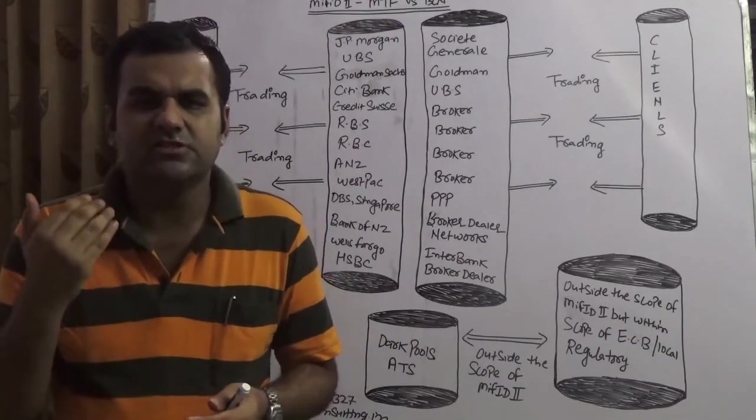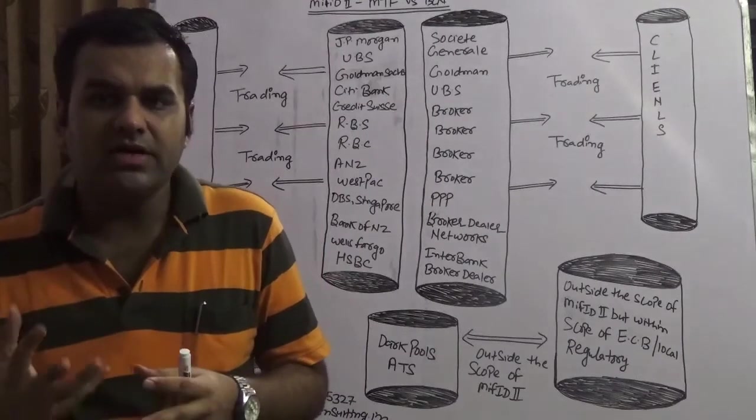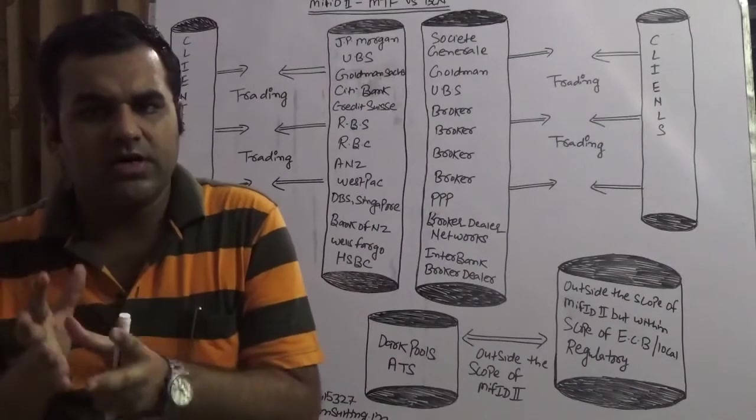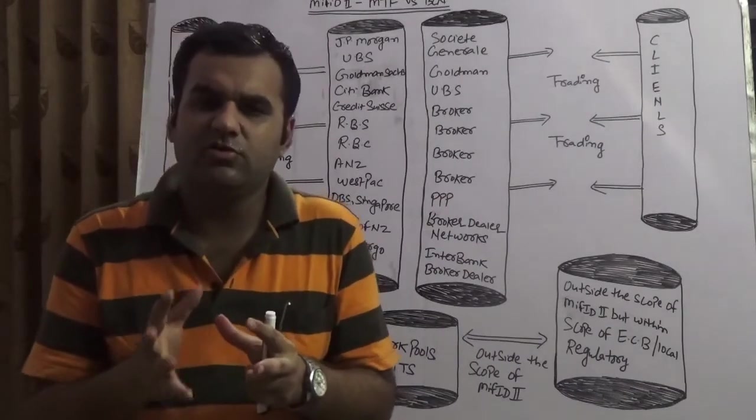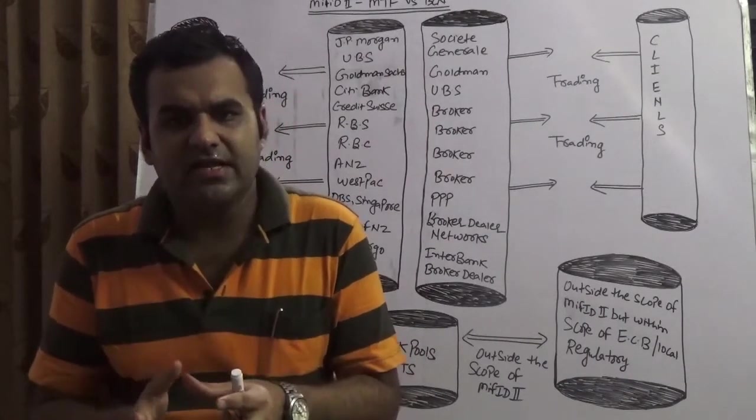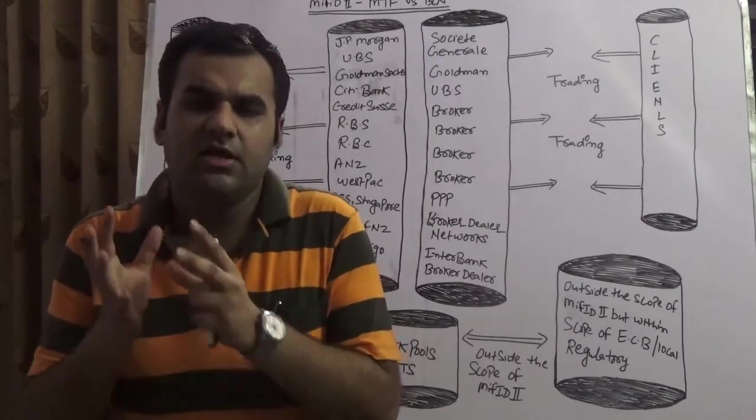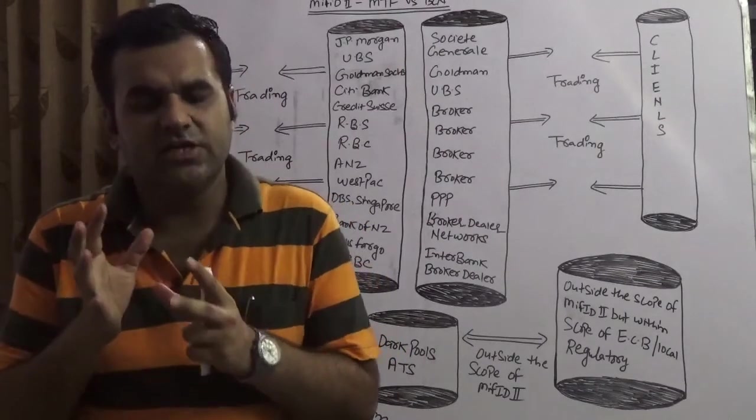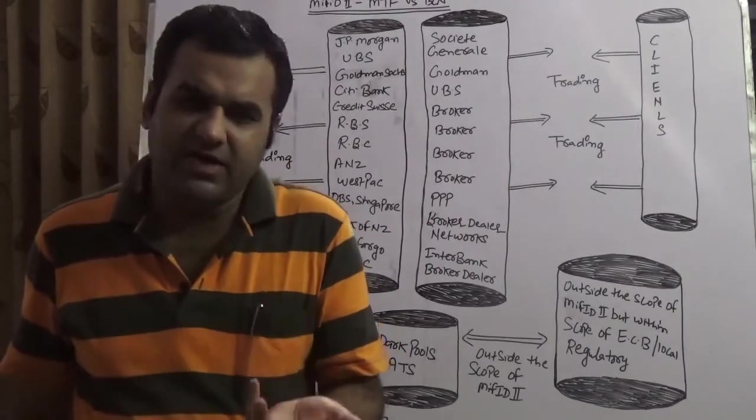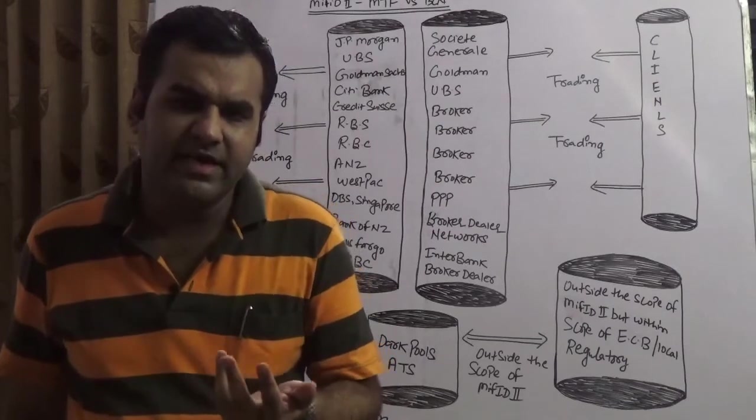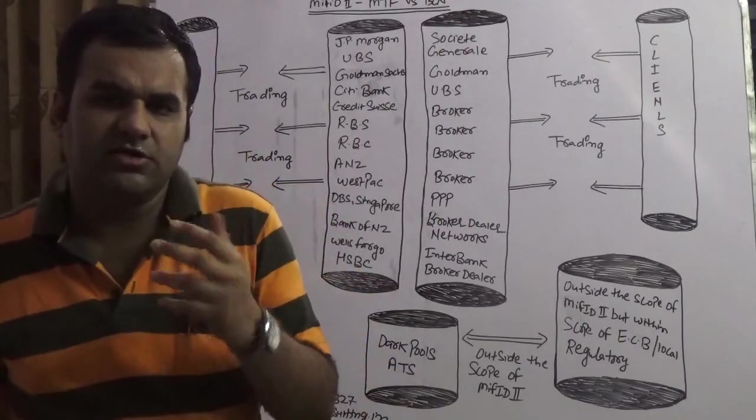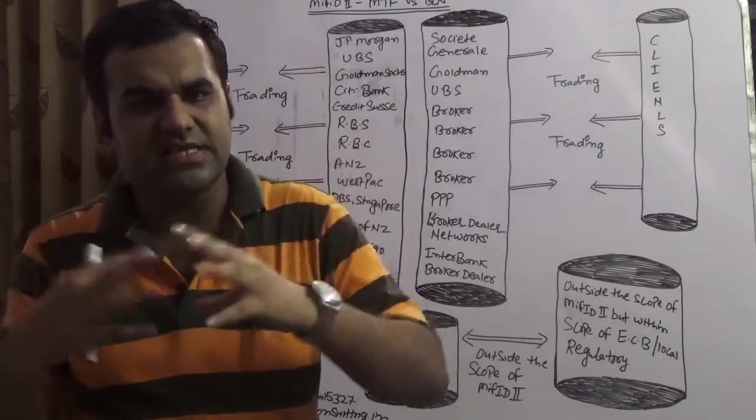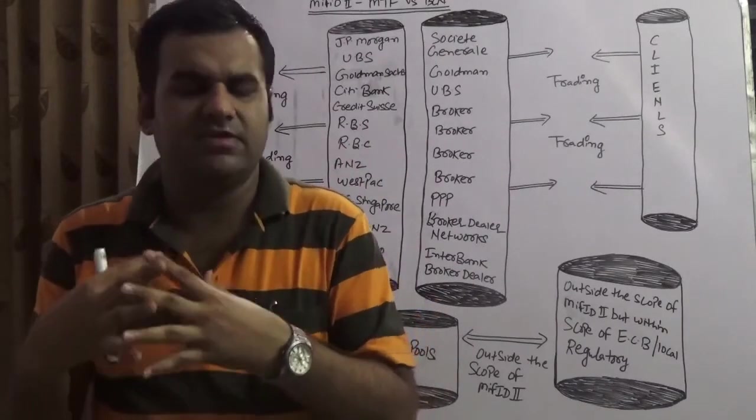On the other hand, we have broker dealing network. Broker dealer networks is a form of PPP which is private placement platforms. In a broker dealer network which are generally used when you do underwriting, in hard underwriting when the banks or all the investment bankers have not been able to sell the product in the market, they will buy because this is a form of hard underwriting. It's a banks, investment bankers, broker who will buy this and access the same using broker dealer network. We also have interbank broker dealer network.